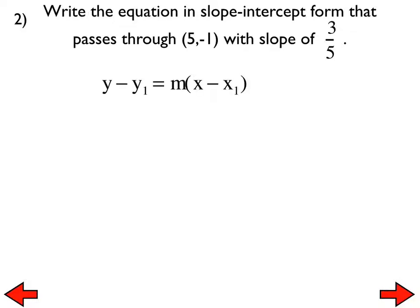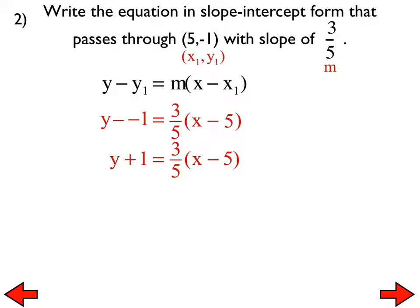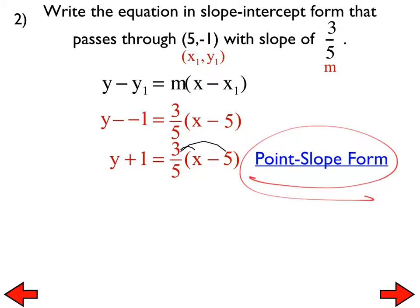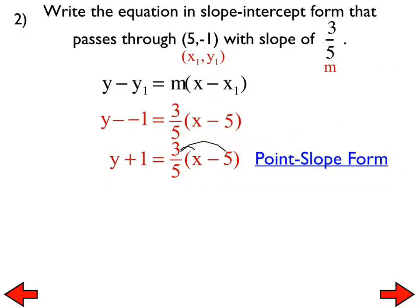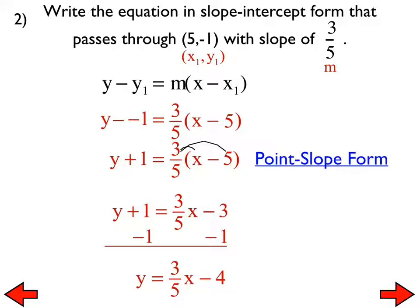Number 2: the ordered pair is 5, negative 1 and the slope is three-fifths. We input those into the point-slope equation and get y minus negative 1 equals three-fifths times the quantity x minus 5. Add the opposite on the left side, use the distributive property. If we stopped here that would be point-slope form, not slope-intercept. Continue simplifying: subtract 1 from both sides to get y equals three-fifths x minus 4.